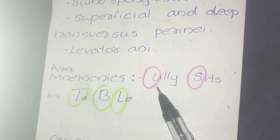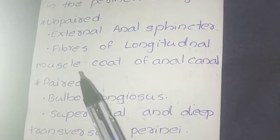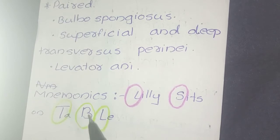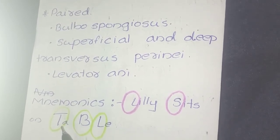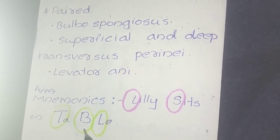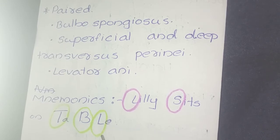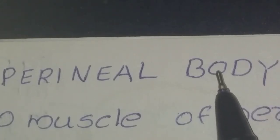The L stands for the longitudinal muscle cord of the anal canal, and S stands for the external anal sphincter. T stands for the transverse perineae — both superficial and deep. B stands for bulbospongiosus, and L stands for levator ani. That's all for the topic of the perineal body.